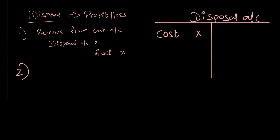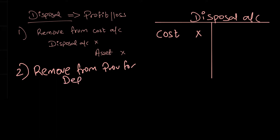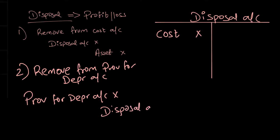The next step is to remove it from the depreciation account. I have to remove this disposal asset from the provision for depreciation account. I debited the provision for depreciation account because remember depreciation is a contra asset, so depreciation essentially decreases my asset from the credit side. If I have to reduce depreciation it should come on the debit side, and I will transfer this depreciation to the disposal account by crediting the disposal account with the depreciation value — provision for depreciation on the credit side.